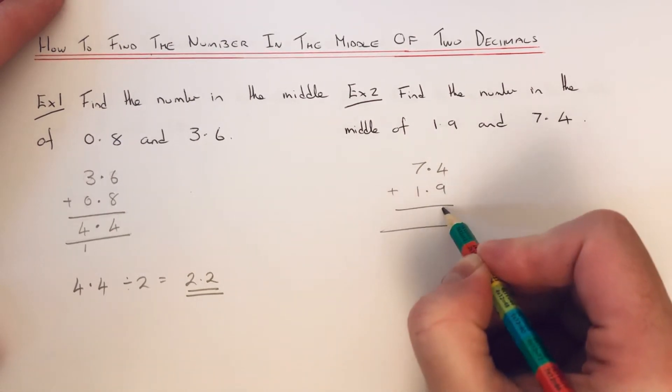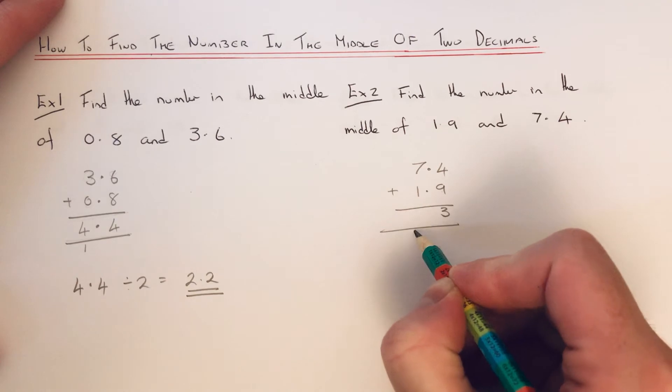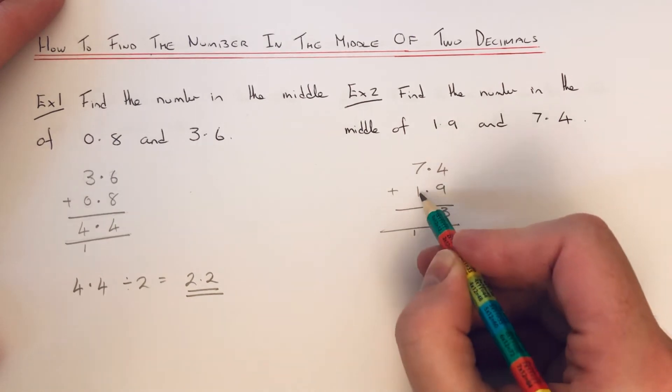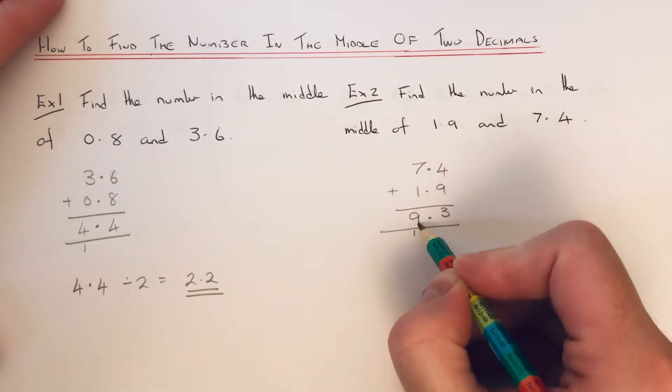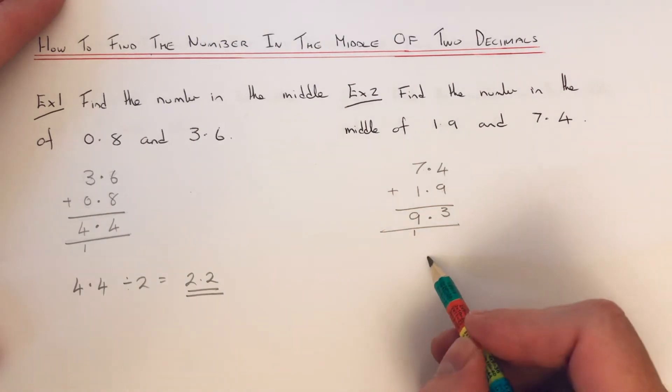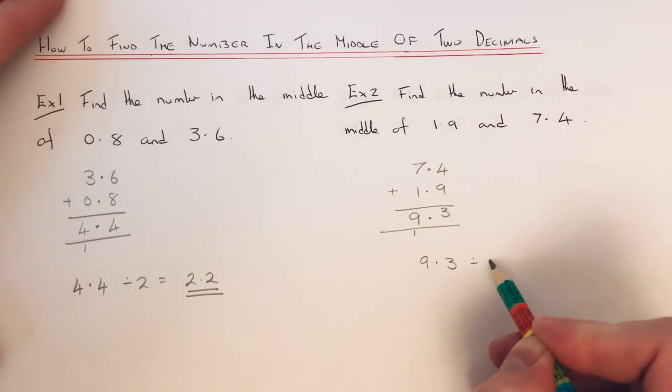So 9 add 4 is 13. 7 add 1 is 8 plus the 1 is 9. So we then just need to divide that answer by 2.